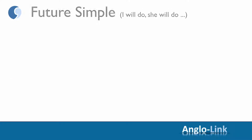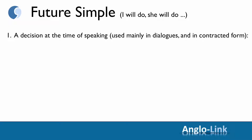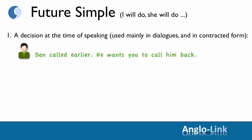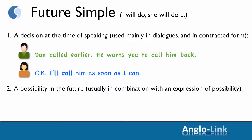Moving on to future tenses, and starting with future simple. As you will remember, there are two main usages. The first one is a decision at the time of speaking — used mainly in dialogues, and it's best to use the contracted form. For example: someone says, 'Dan called earlier, he wants you to call him back.' Reacting to this, the listener will say, 'Okay, I'll call him as soon as I can.' The second usage was for a possibility in the future, and usually you need to include an expression of possibility in your sentence — for example: I will probably call him this afternoon.